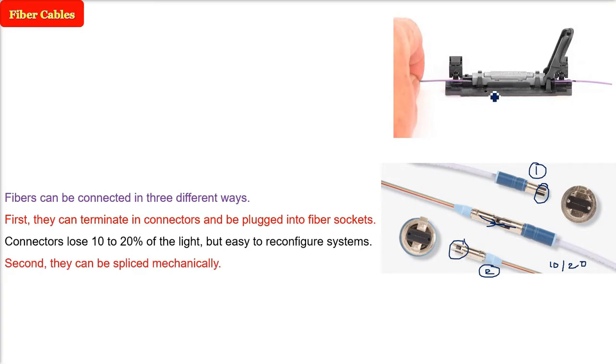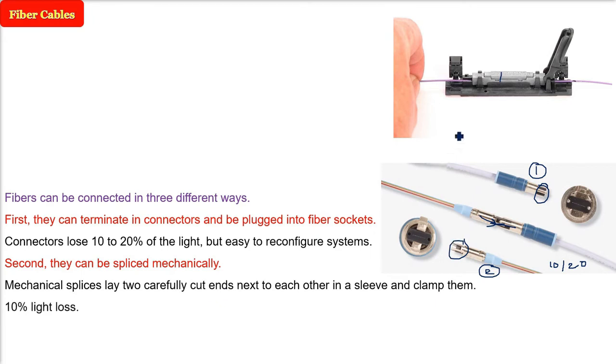Second one is they can be spliced mechanically. This is a machine you see also. The mechanical splices lay two carefully cut ends next to each other in a sleeve and then clamp them. So 10% light loss is there.